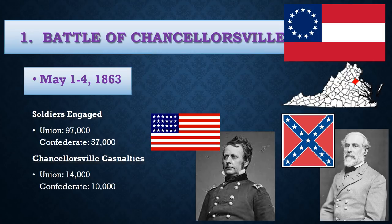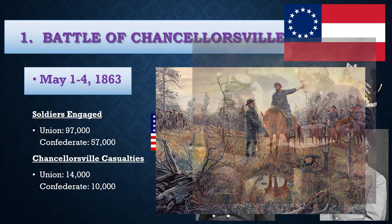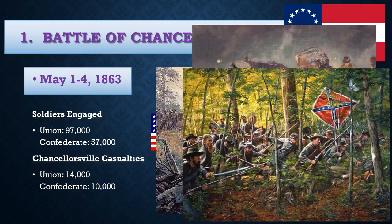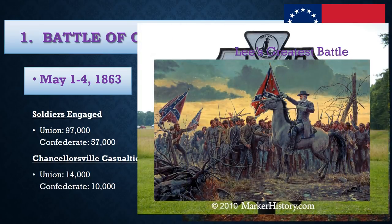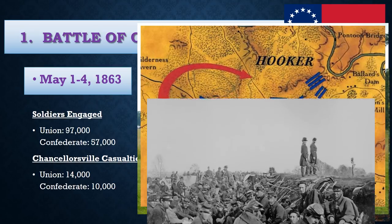Chancellorsville is actually considered Lee's greatest battle. He worked alongside his right-hand man Stonewall Jackson to split his army into two parts to surround the Union forces. This clever maneuver outsmarted Hooker and his troops, making them think there were more Confederate forces than there actually were. You can see from the battle map how Lee's troops surrounded the Union on both sides.